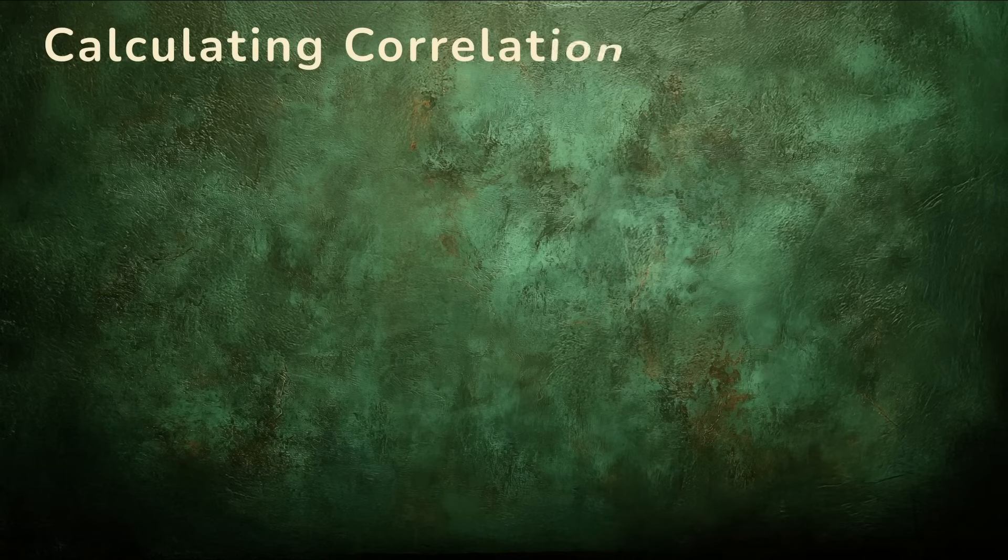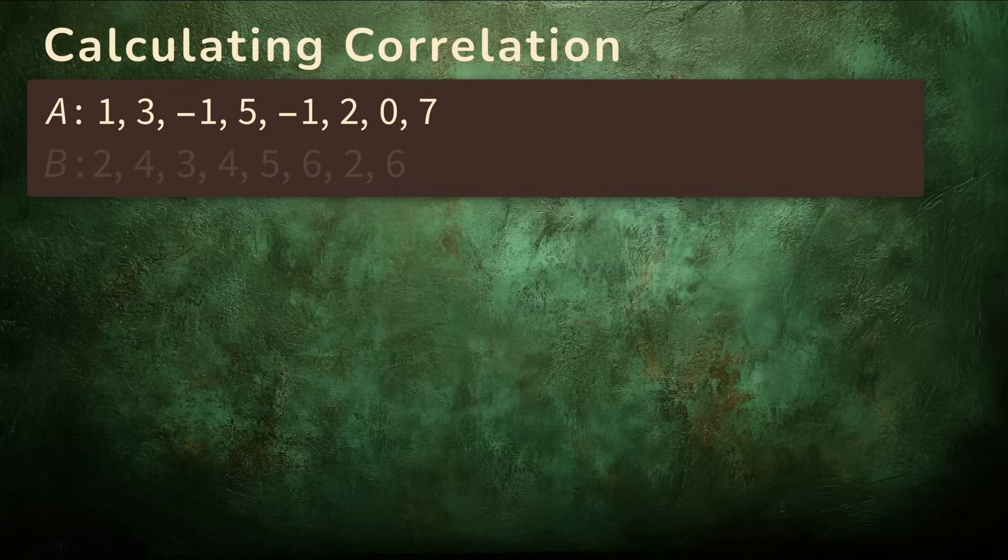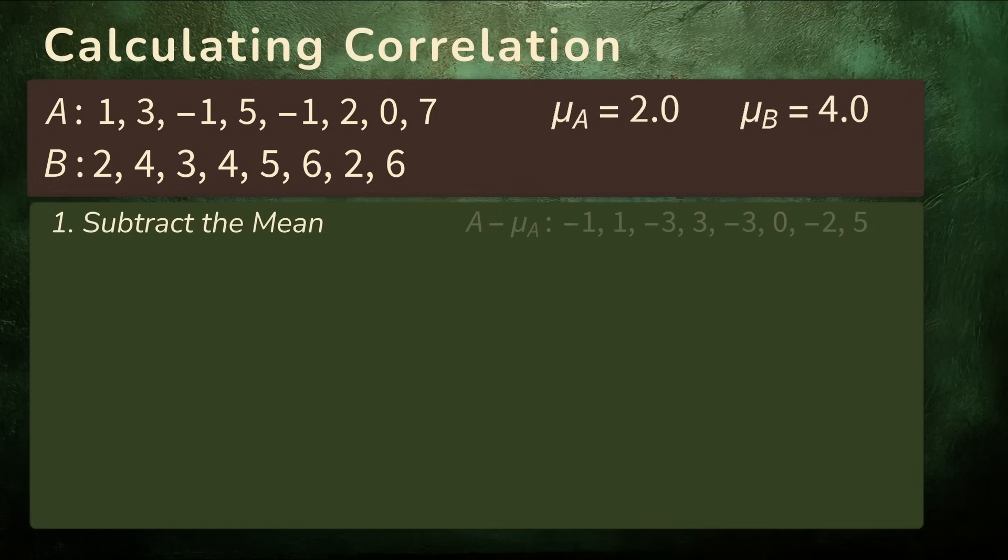Forget stocks for a moment. Suppose we just have two short sequences of numbers, we'll call them A and B. We want to know how strongly do these two sequences move together. Step one is to subtract the mean from each value. This removes the baseline, so we're measuring how far each value is from its own average. Now both sequences are on the same level.